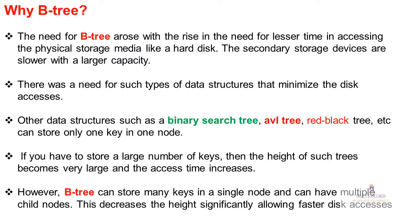Other data structures such as binary search tree, AVL tree, red-black tree etc. can store only one key in one node. Problem yeh thi ki kisi bhi node me hum only one key store kar sakte the, aur ek key ke saath two children hi hold kar sakte hain. Isi reason se tree ki height increase hoti thi. If you have to store a large number of keys, the height becomes very large and access time increases — performance is down. However, B-tree can store many keys in a single node and can have multiple child nodes, which decreases the height significantly allowing faster disk access.